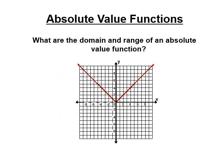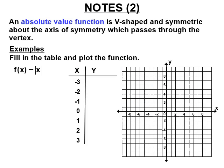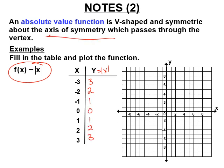We saw this picture in an earlier lesson on translation of functions. Parabolas are U-shaped; there's also a V-shaped function, and that V-shaped function is absolute value. We're going to graph the simplest one: y equals the absolute value of x. The absolute value of negative 3 is 3, negative 2 gives 2 — fill in the rest of the table and plot the points. These are symmetrical, just like parabolas.